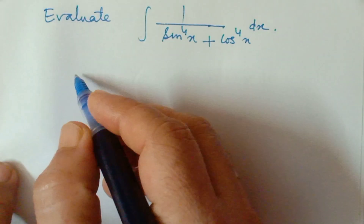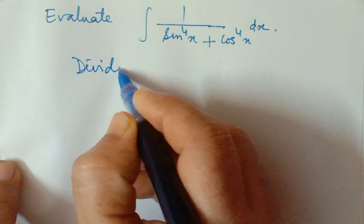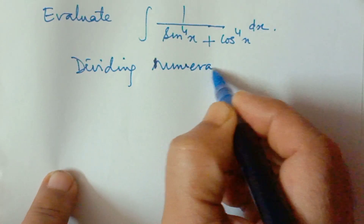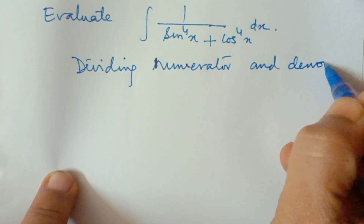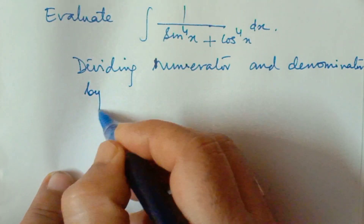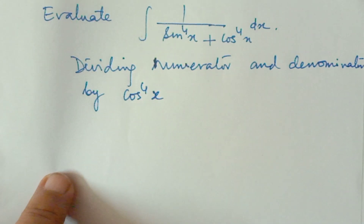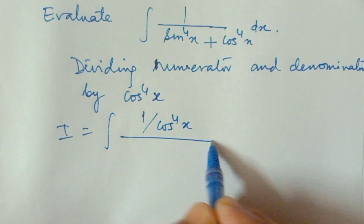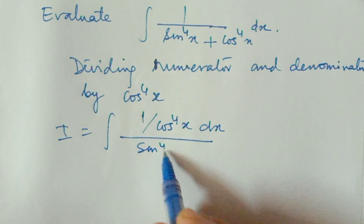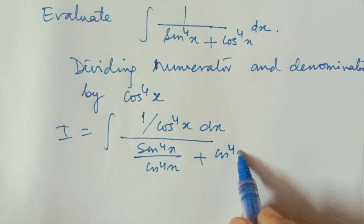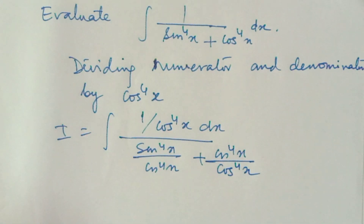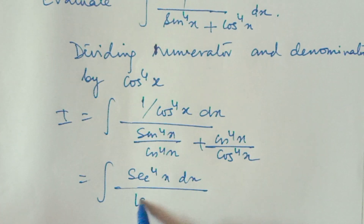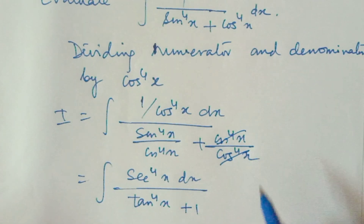To solve this, we divide both the numerator and denominator by cos to the power 4x. The integral becomes the integral of 1 over cos to the power 4x dx, divided by sin to the power 4x over cos to the power 4x plus 1 — since the cos⁴x terms cancel in the denominator.